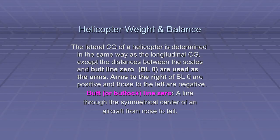The lateral center of gravity of a helicopter is determined in the same manner as the longitudinal center of gravity of an airplane, except the distances between the weighing points and buttline zero are used as the arms. Arms to the right of buttline zero are positive and those to the left are negative.